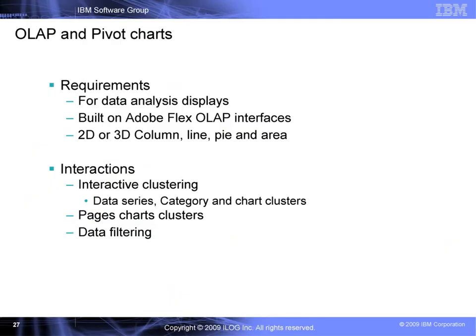The last feature we'll look at is the pivot charts. They are often compared to Excel pivot charts, but they also support multiple chart clusters. This module was designed to build interactive dashboards and data exploration displays to represent and analyze data from multiple points of view using clustering and drill-down. Elixir pivot charts are built on Adobe Flex OLAP interfaces and offer the same APIs as the Flex OLAP DataGrid for easy upgrades. The difference is that the pivot chart supports any user-interactive clustering and drill-down.